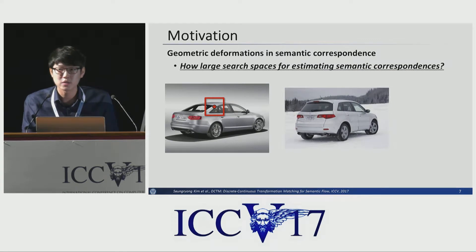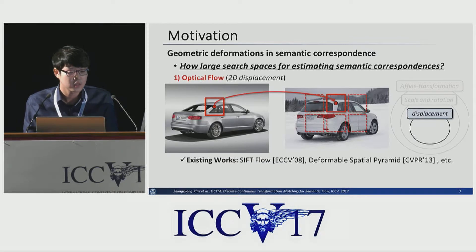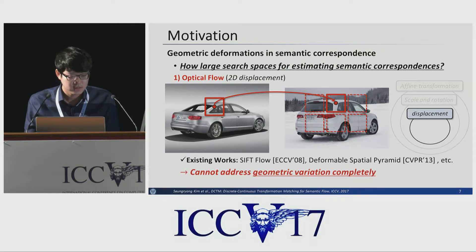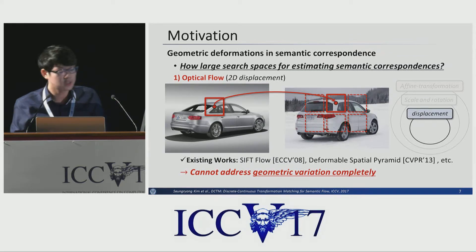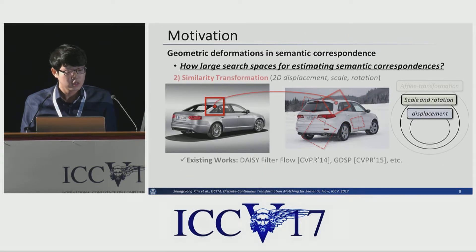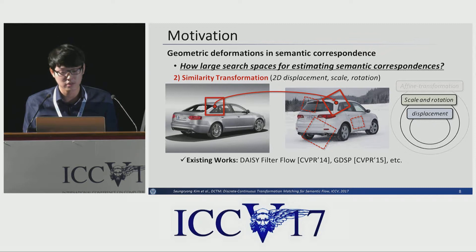Let's think about the geometric variation in semantic correspondence. How large a search space should we consider to estimate semantic correspondence? In most methods, such as optical flow, they consider only the 2D displacement field between two images, and cannot address geometric variation completely. To handle more complex geometric variation, similarity transformations consisting of 2D displacement, scale, and rotation are needed.